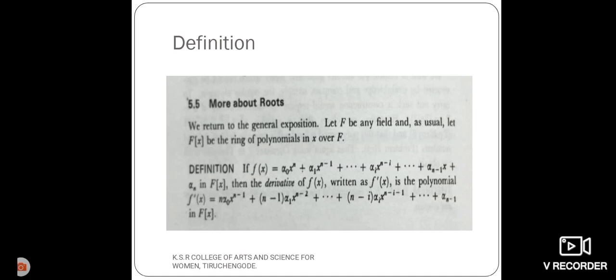plus N minus i into alpha i X power N minus i minus 1 plus... alpha N minus 1, which belongs to the ring of polynomials F of X.